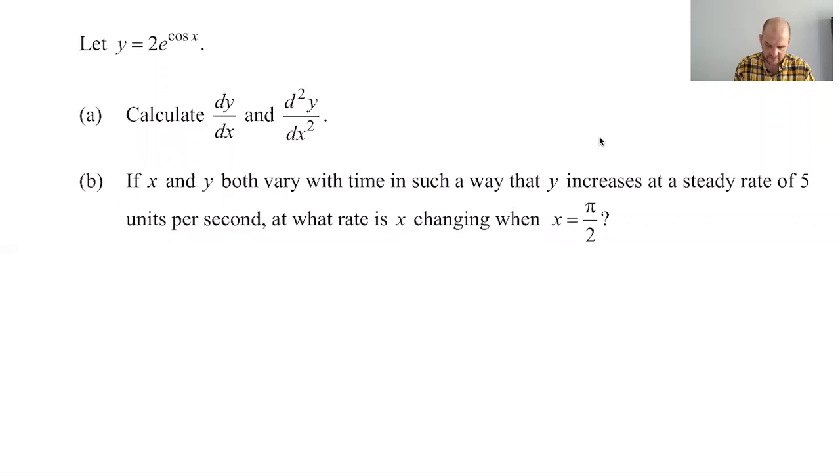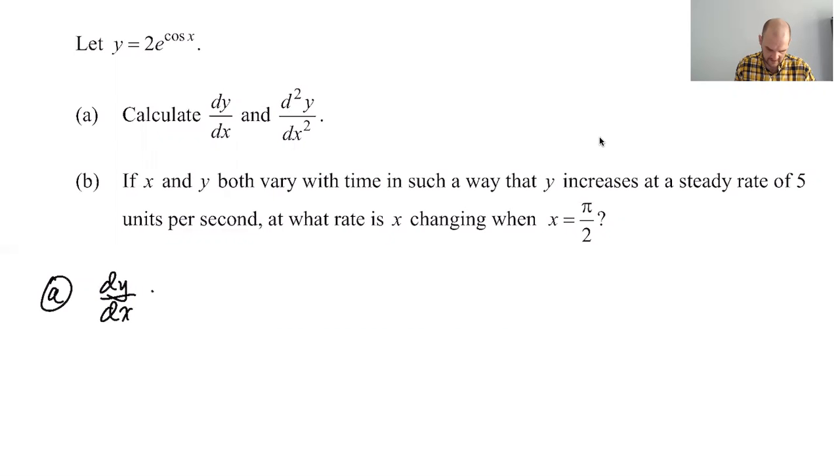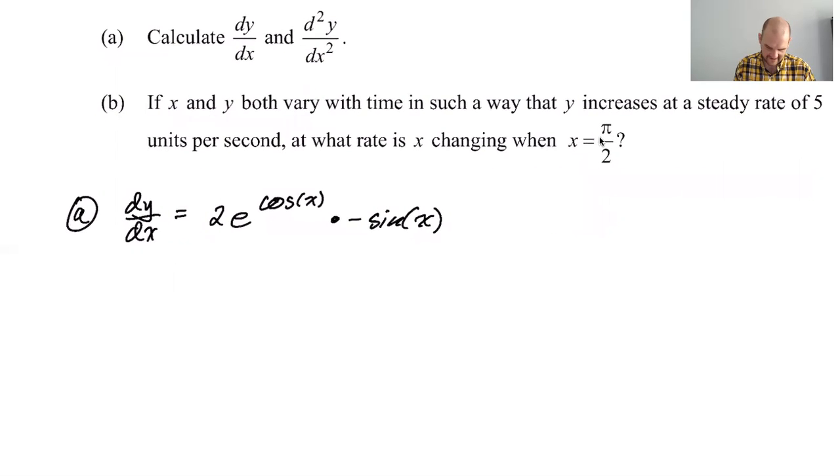I don't know why that 2 is there, but we need to find dy/dx and also the second derivative. So dy/dx, part A is a chain rule problem, so it's 2e to the cosine of x times the derivative of cosine, which is negative sine. That's dy/dx. I would probably rewrite it as negative 2 sine of x e to the cosine of x.